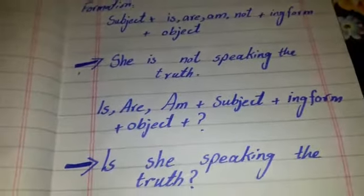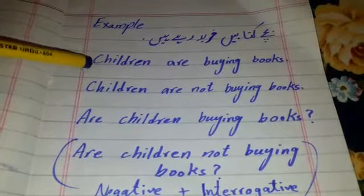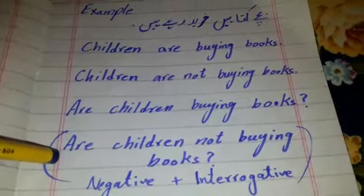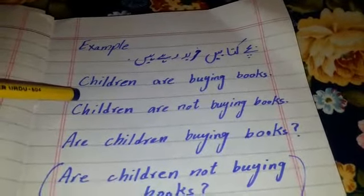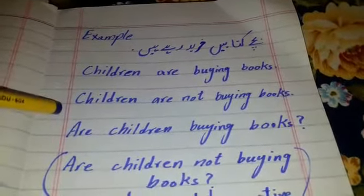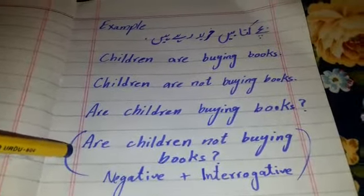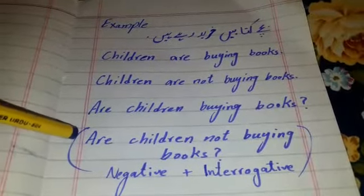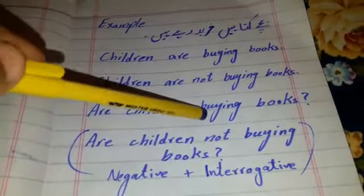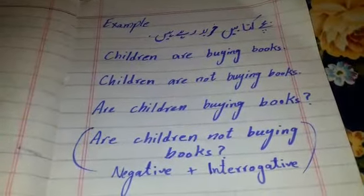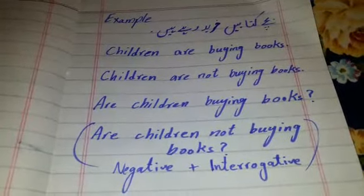Present continuous tense means the action is going on but not completed. Here is another example covering affirmative, negative, interrogative, and negative-interrogative combined. 'Bachche kitaben khareed rahe hain' — 'Children are buying the books.' Negative: 'Children are not buying the books.' Interrogative: 'Are children buying books?' Negative-interrogative: 'Are children not buying books?' — that is negative and interrogative together. Formation: helping verb, then subject, then not for negative, then ing form plus object.